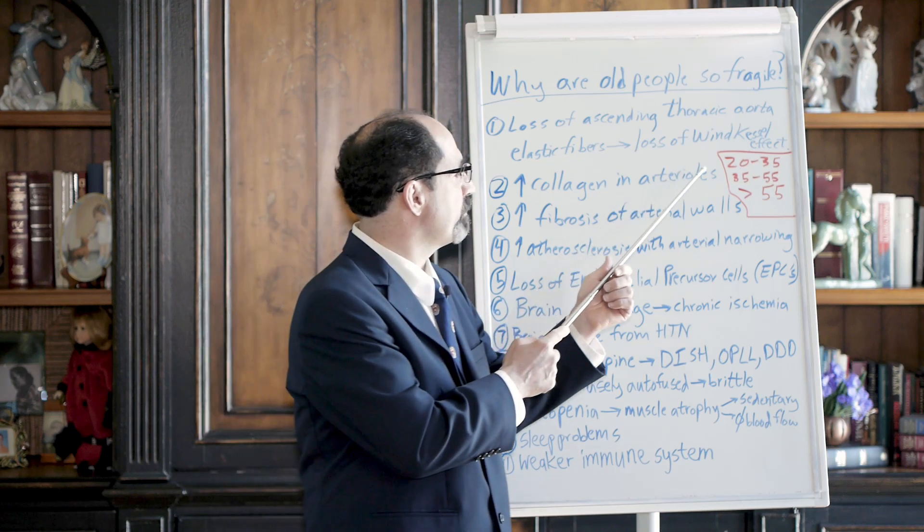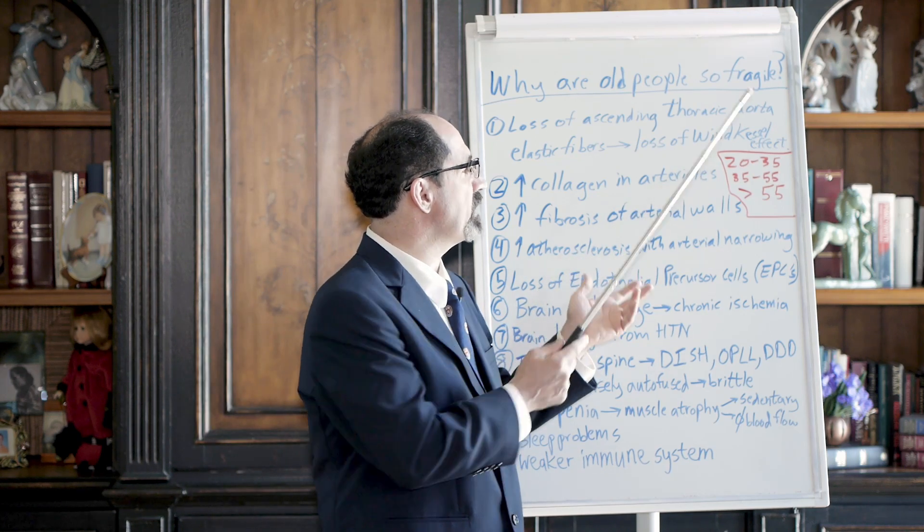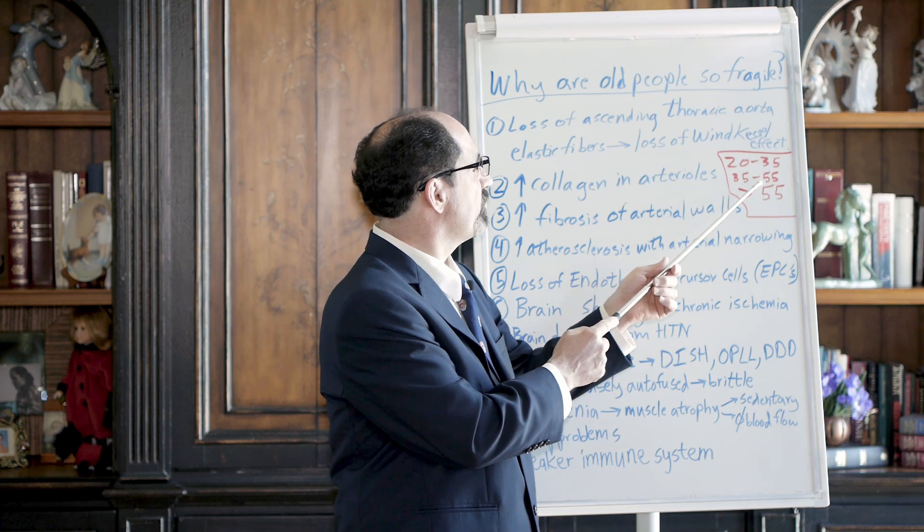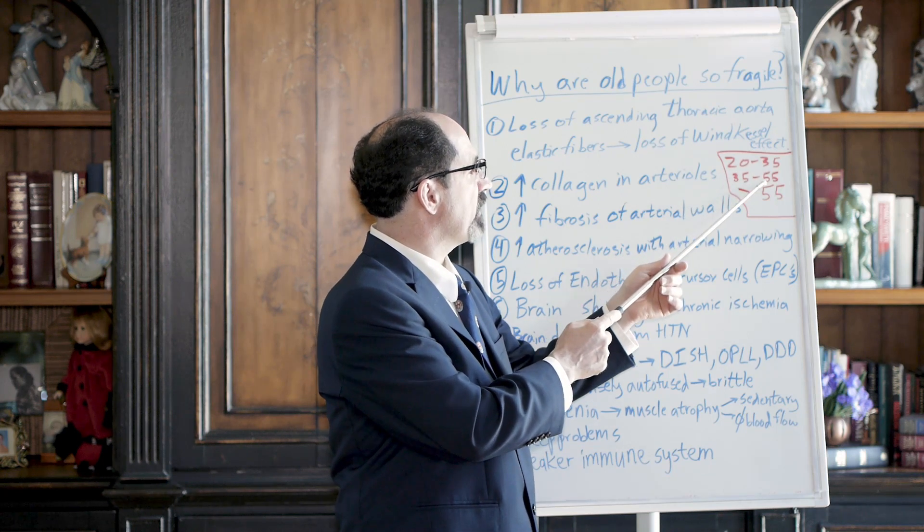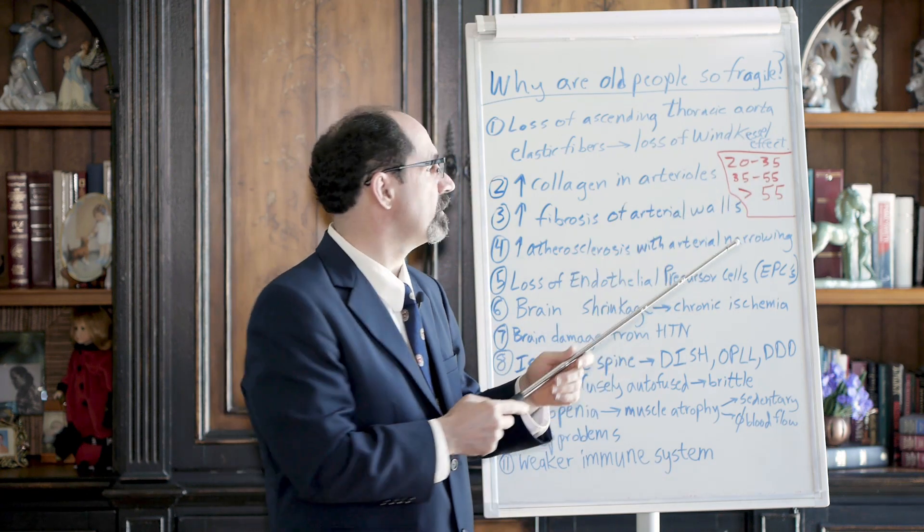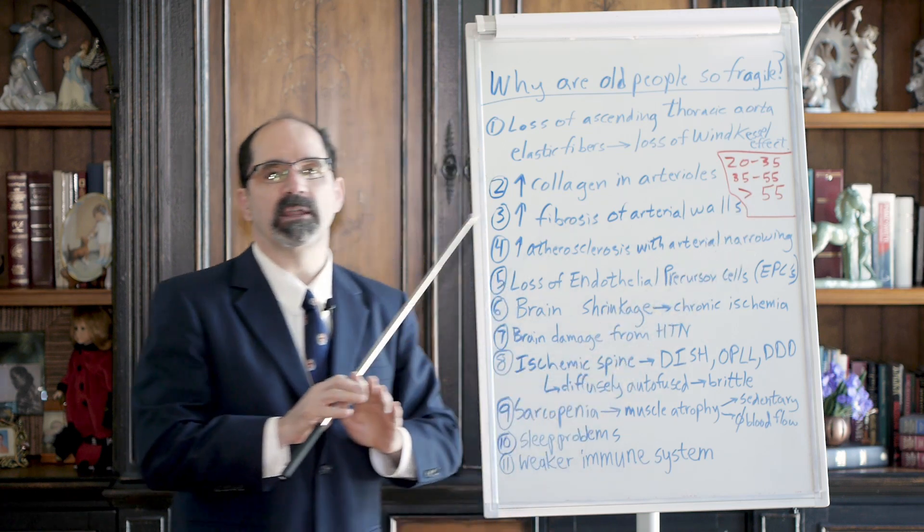I would put adults into these three categories: 20 to 35 young adult, 35 to 55 years middle-aged adult, and over 55 we'll call older people.